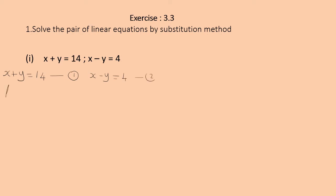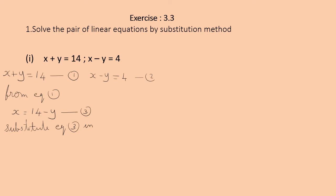From equation 1, write the equation in terms of x: x = 14 − y. Number this as equation 3. Now substitute equation 3 into equation 2.